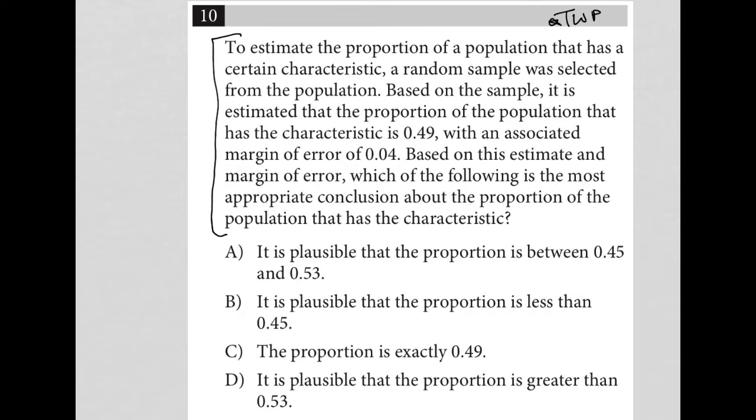The next sentence, based on the sample, it is estimated that the proportion of the population that has the characteristic is 0.49. All right, so I'll just write that down. 0.49 has characteristic, which I'll just say CHAR, with an associated margin of error of 0.04. Okay, so margin of error, I'll just say MOE of 0.04.